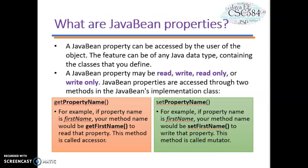Let's look at the Java Bean properties. A Java Bean property can be accessed by the user of the object. The feature can be any Java data type, including classes that you define. The Java Bean property may be read-write, read-only, or write-only. Java Bean properties are accessed through two methods in the Java Bean implementation class.